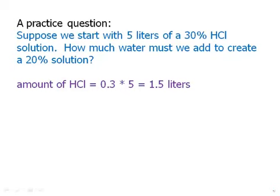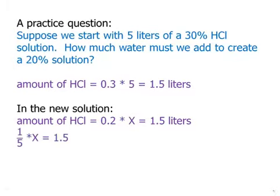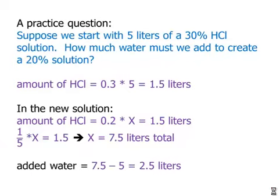And of course that's not going to change if all we're adding is water. So, we're going to have a new amount, and it's going to be 20%, and it's going to have the same amount of HCl in it, the same amount of solute in it. And so here, we need to solve for X, and that will be the total amount of solution. So, of course, 0.2 times X is 1.5, multiply both sides by 5, we get 7.5 liters. And so the old solution was 5 liters, the new solution is 7.5 liters, so the difference is 2.5 liters, and that's how much extra water we need to add to bring this from a 30% solution to a 20% solution.